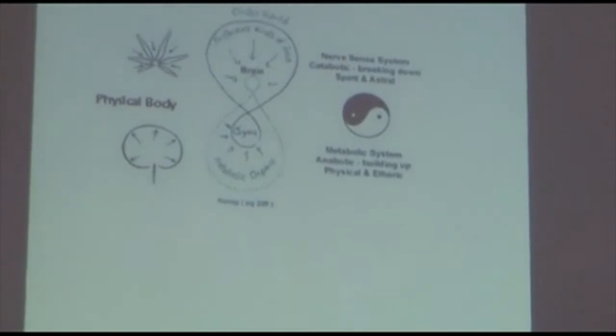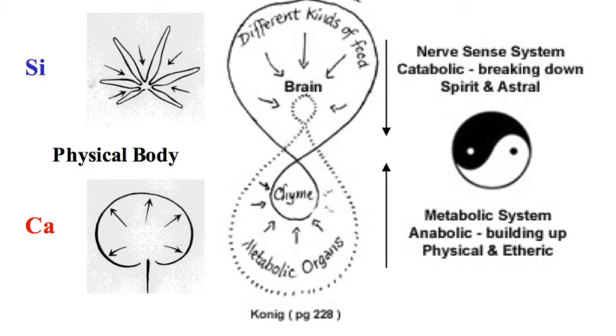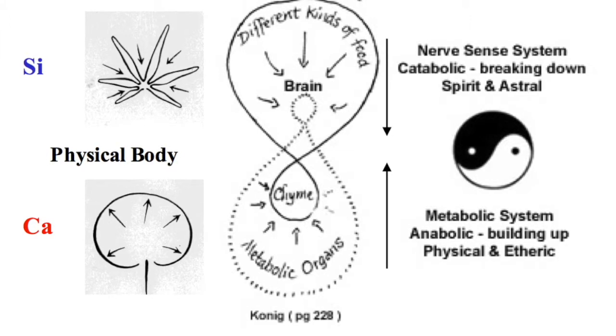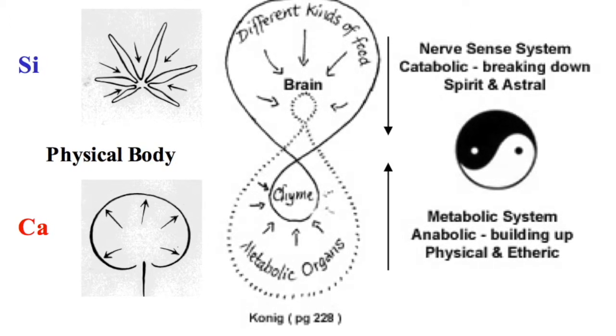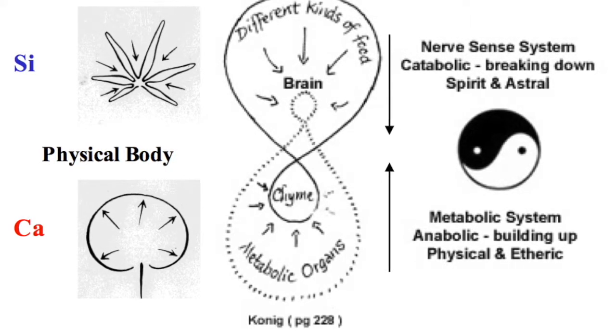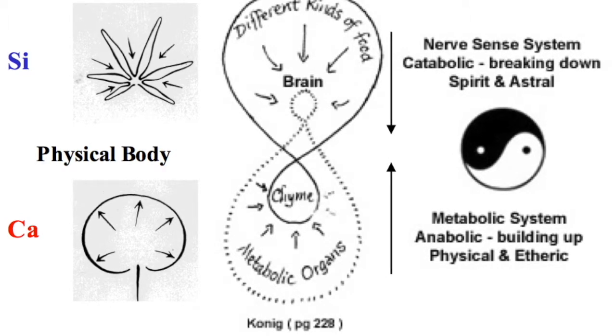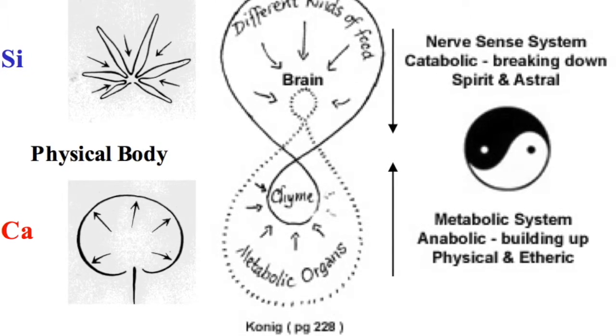And these are the pictures that we get. This is actually by Karl Koenig in his book. And so one of the big comments that Steiner makes, especially in his 1920 lectures, is that there's a very, very close connection between the head and the metabolic system. And that whatever happens in the head has a corresponding activity in the metabolic system. And that it literally is tied together.